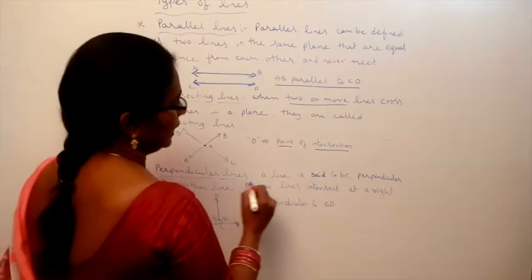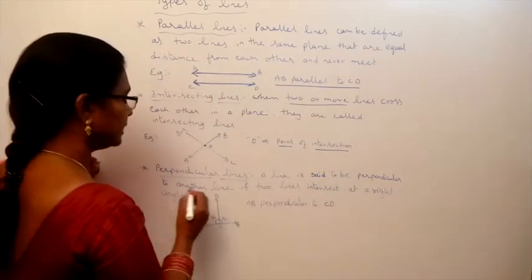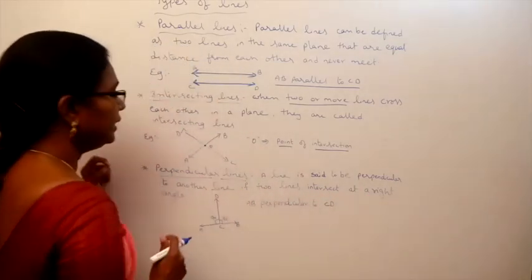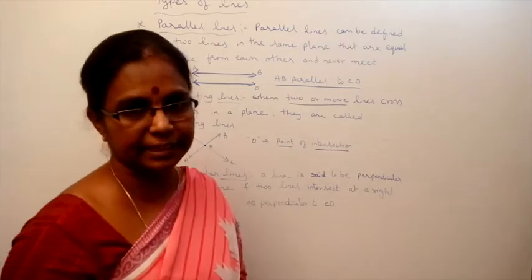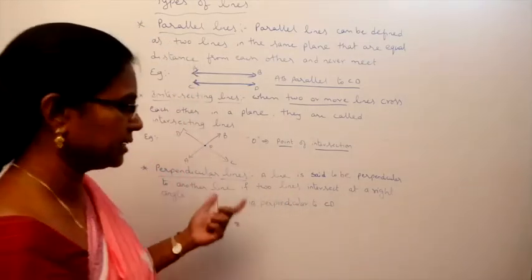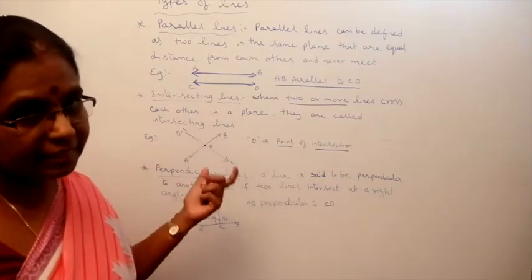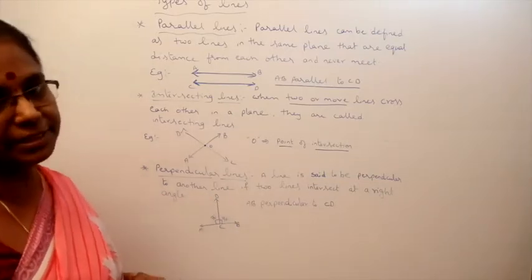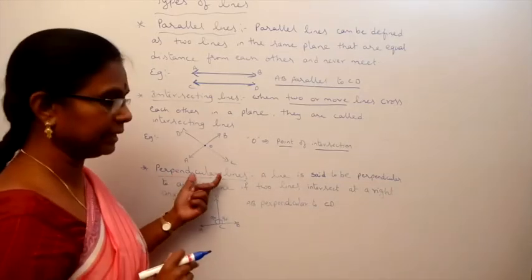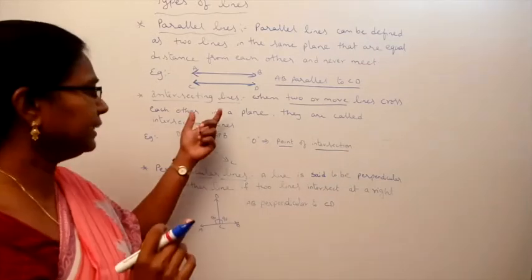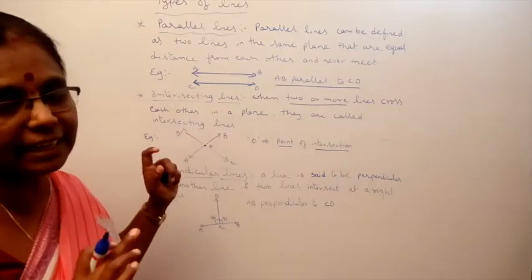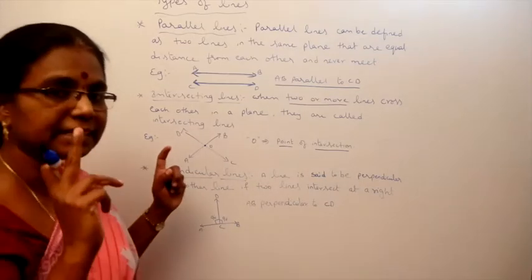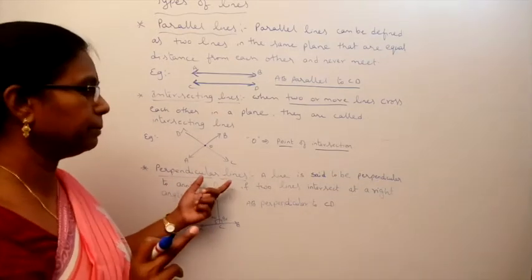Next, perpendicular lines. A line is said to be perpendicular to another line if the two lines intersect at a right angle. Perpendicular lines are also intersecting lines, but when they intersect, the angle formed must be 90 degrees. Then those are called perpendicular lines.